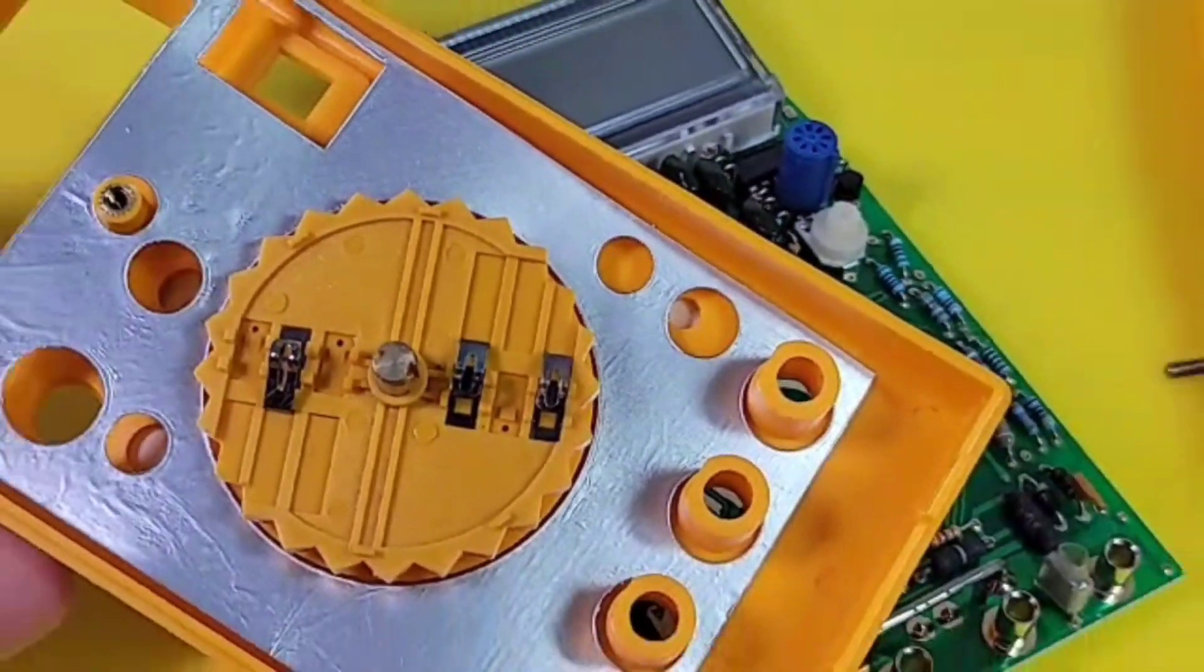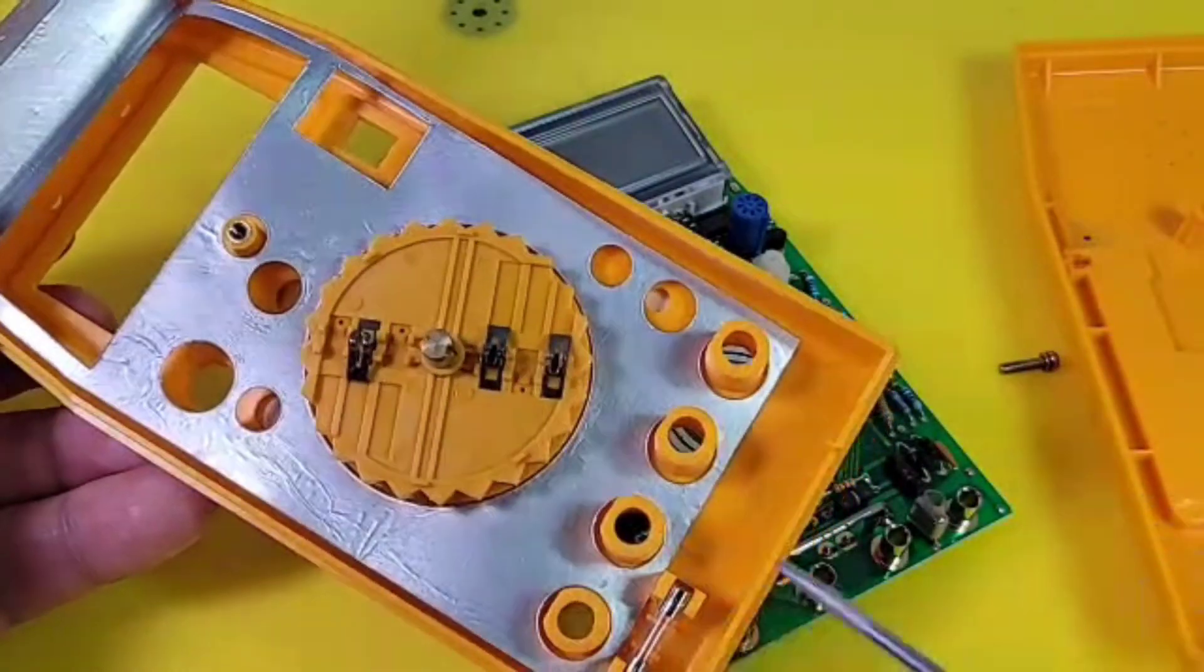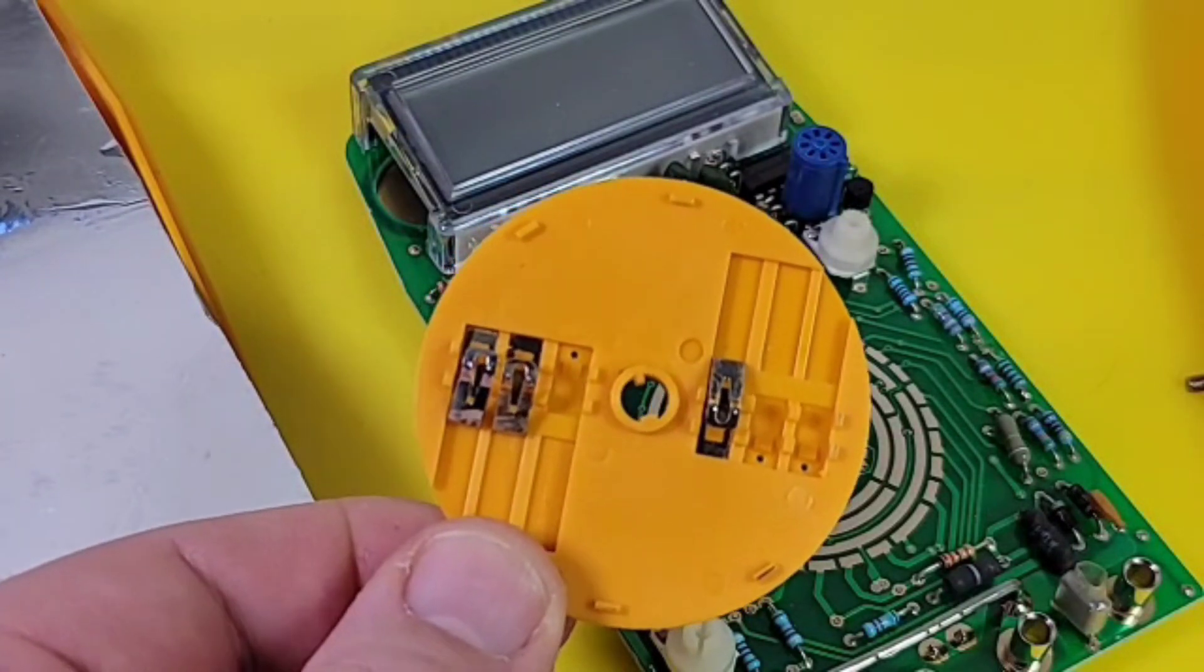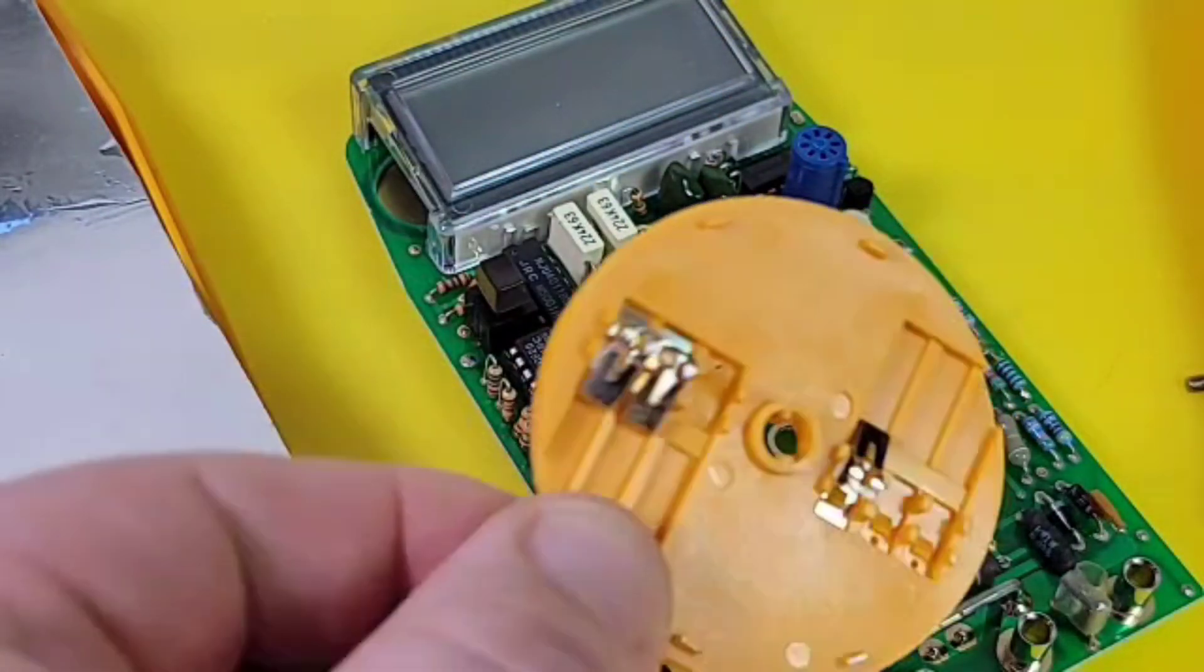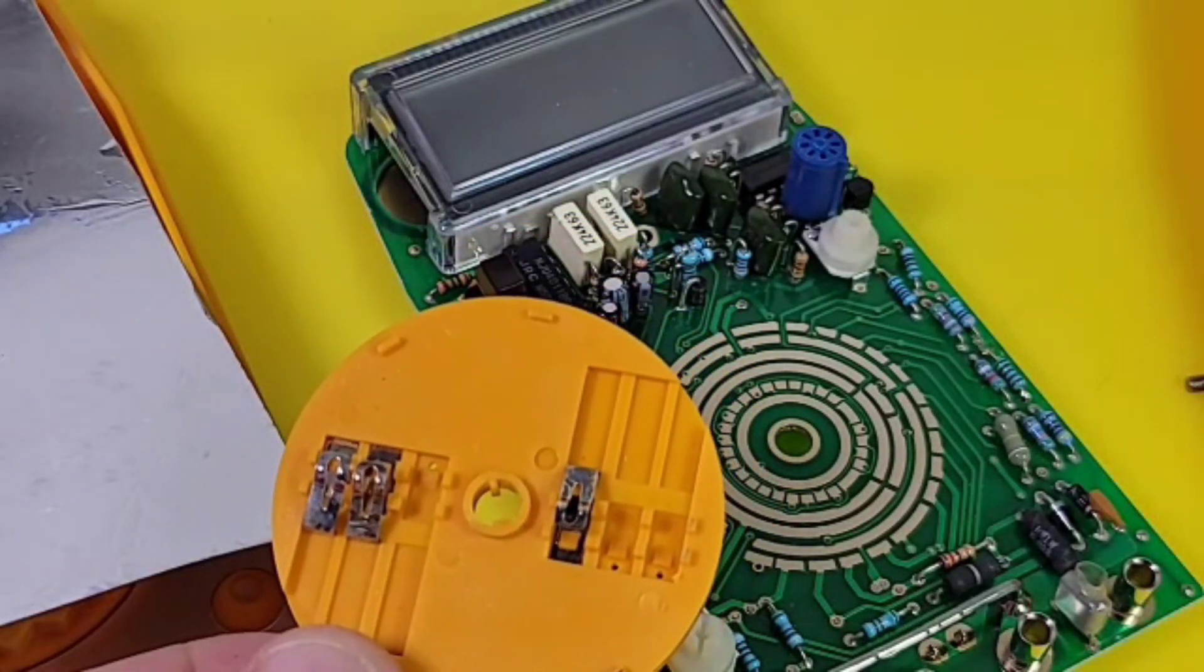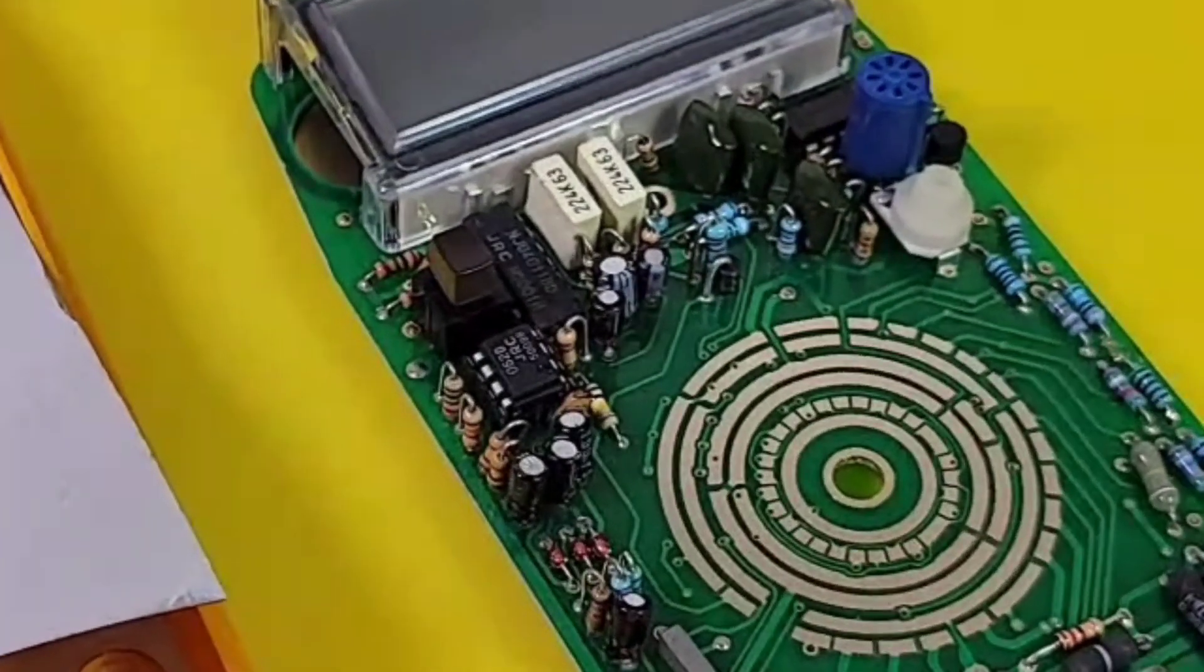And there's the rotary selector knob itself. The other side, three more pads for a total of six pads altogether, making contact with that rotary track. And speaking of tracks, well, look at those tracks. Very, very nice. No dielectric has been applied on the tracks at all.